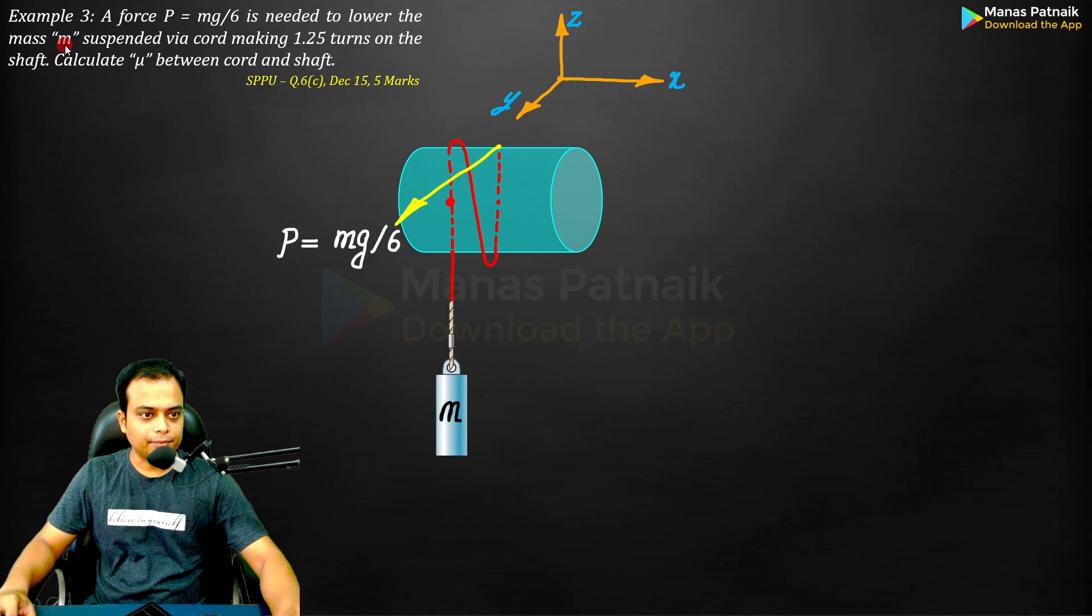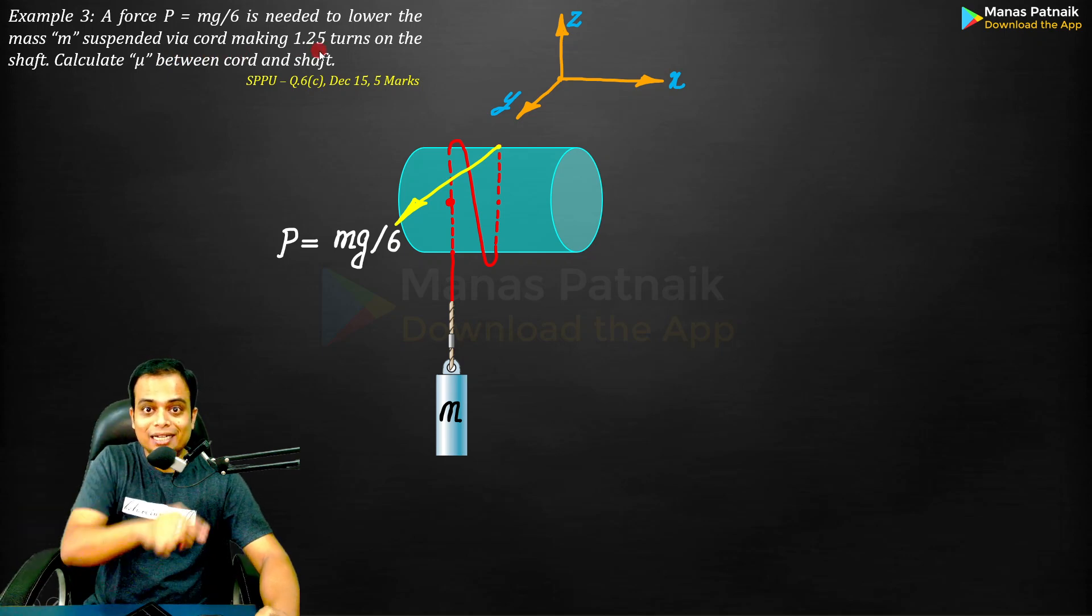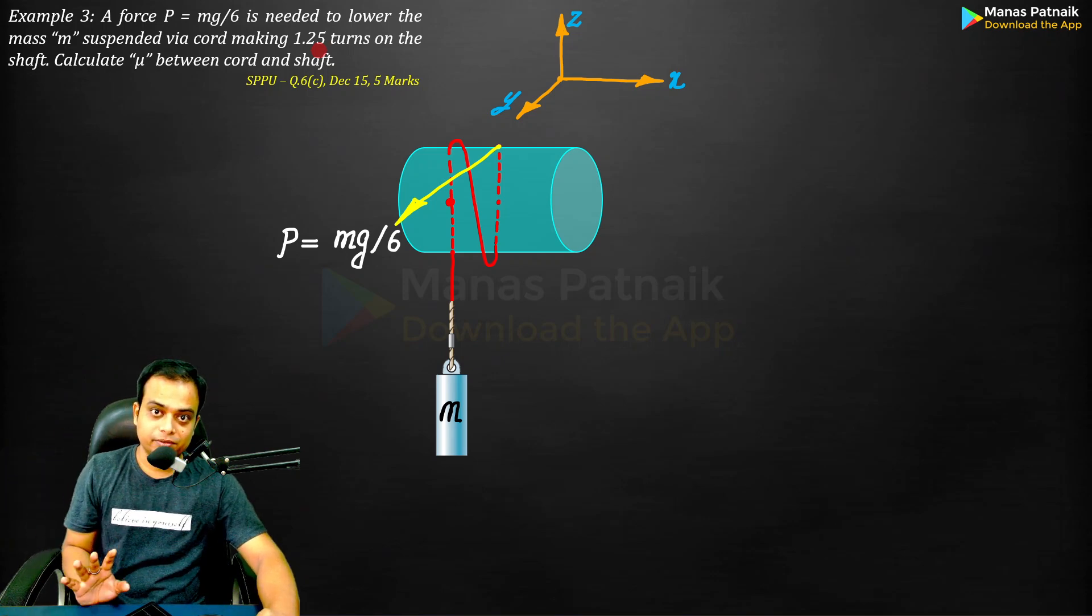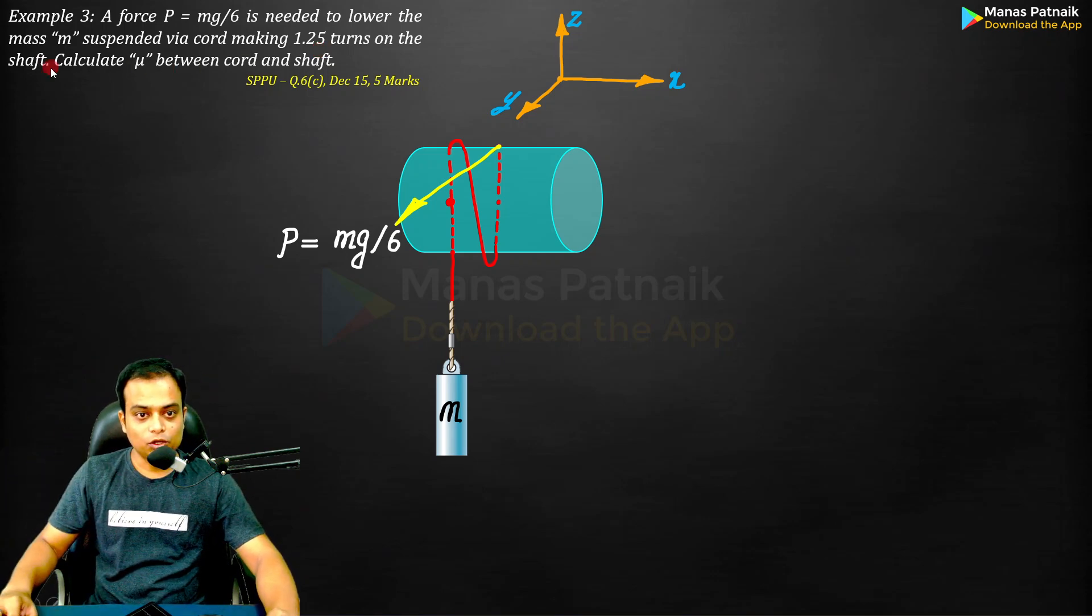This is the mass m - lower, you already know the impending motion - suspended via cord making 1.25 turns. One turn and then a quarter turn, one plus one by four you can say, on the shaft.